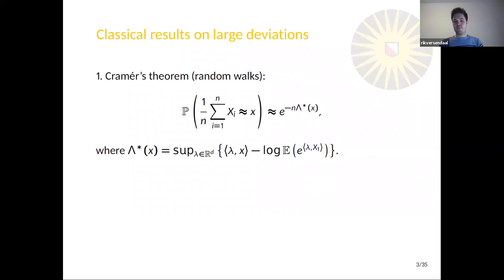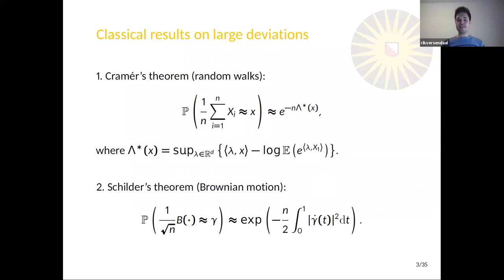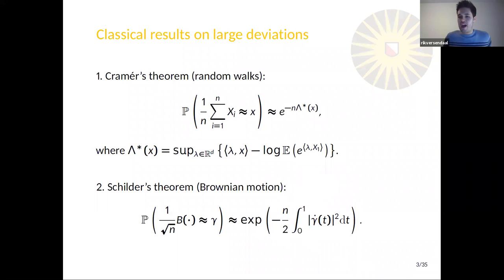These are discrete processes, discrete random variables. You can also think of continuous time processes such as Brownian motion — you can also do large deviations for these. If you take a Brownian trajectory and you scale it by square root n, then typically this goes to the zero trajectory. But the probability that it finds itself around some certain trajectory gamma actually decays exponentially in n, and the rate is given by the action of the trajectory — there is a physical interpretation of the rate function of a trajectory occurring.